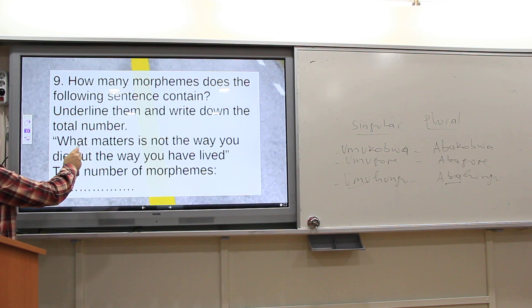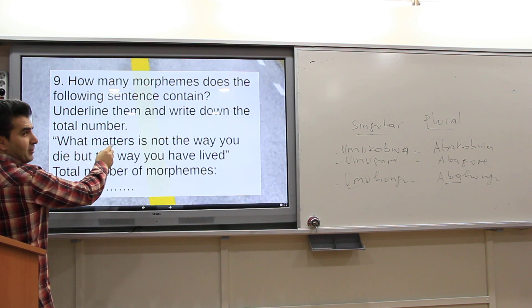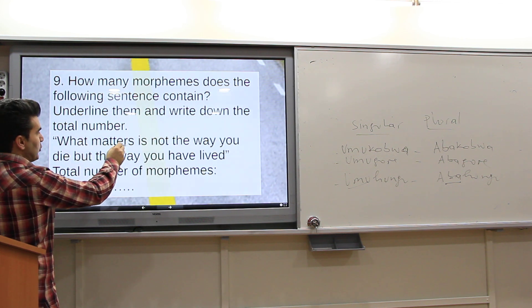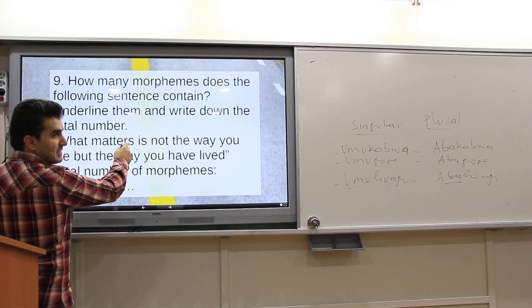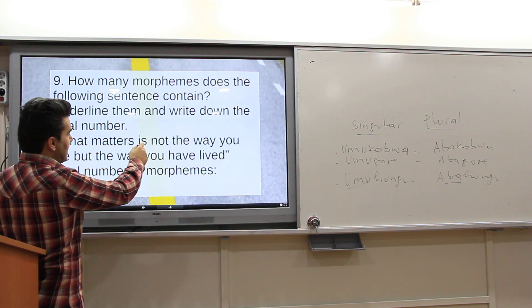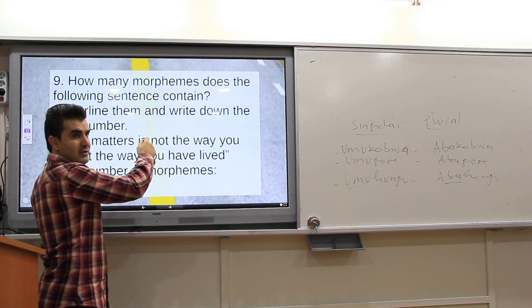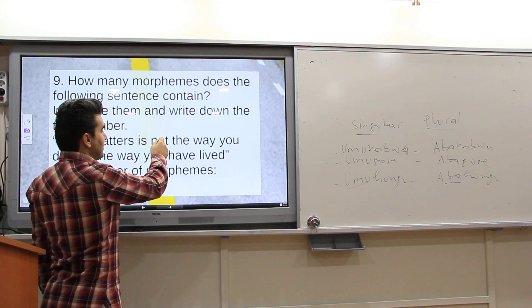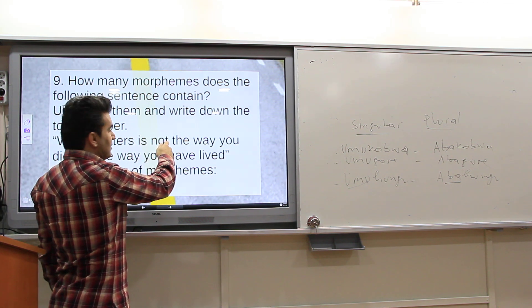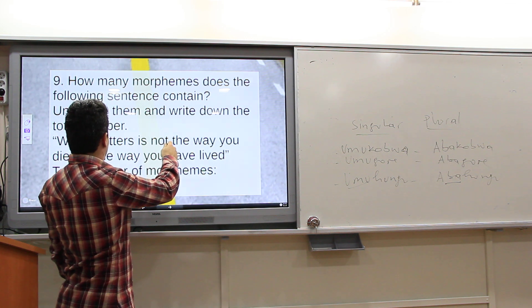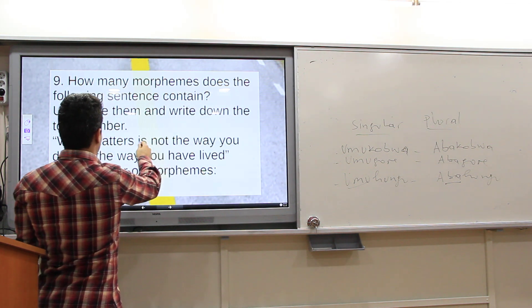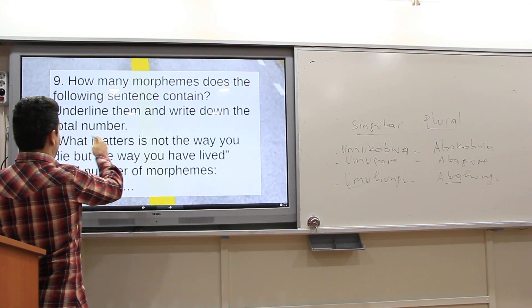Counting through the sentence: What — one; matters — two (with bound morpheme); is — three; not — four; the — five; way — six. Continuing: you, die, but, the, way, you, have, lived — counting each morpheme including bound inflectional ones.